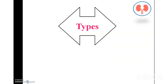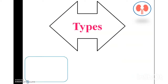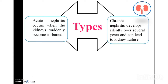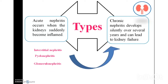Coming to the types of nephritis. One is acute, another one is chronic. Acute nephritis occurs when the kidneys suddenly become inflamed. Chronic nephritis develops silently over several years and can lead to kidney failure. Under the category of acute nephritis are interstitial nephritis, pyelonephritis, and glomerulonephritis.